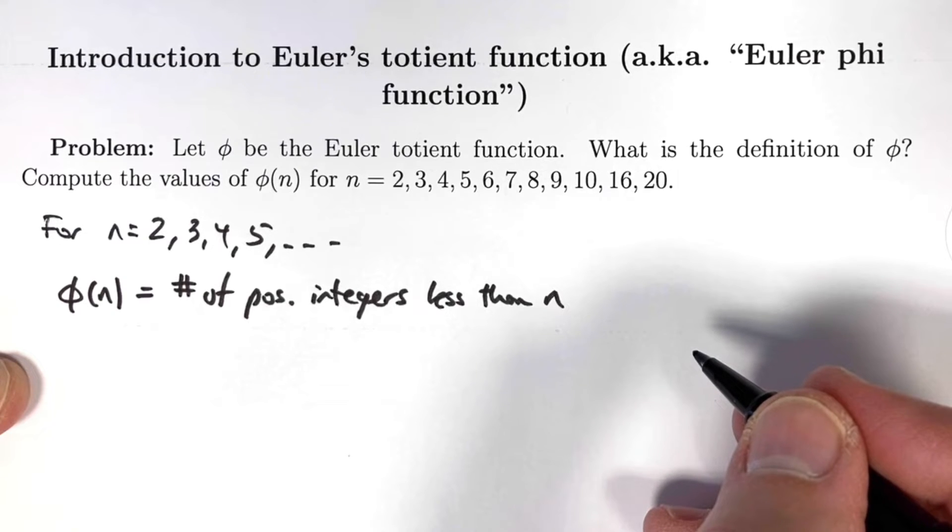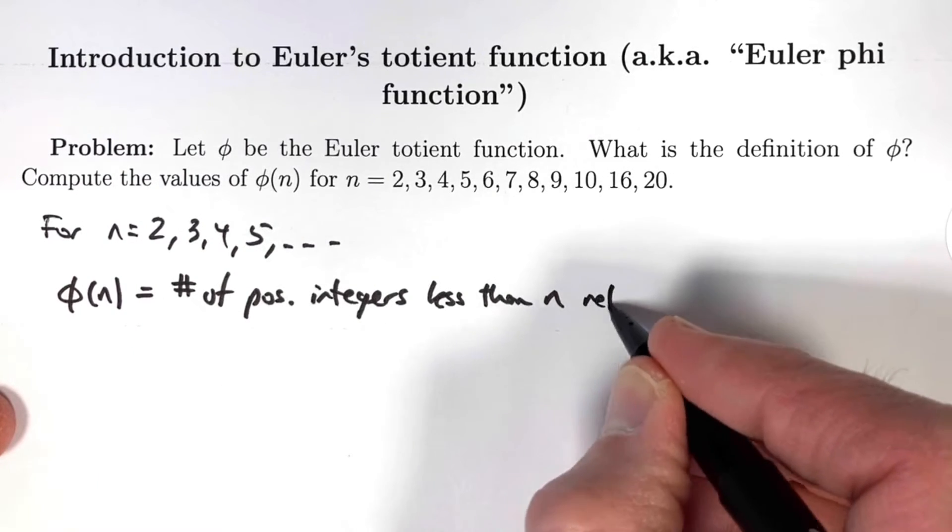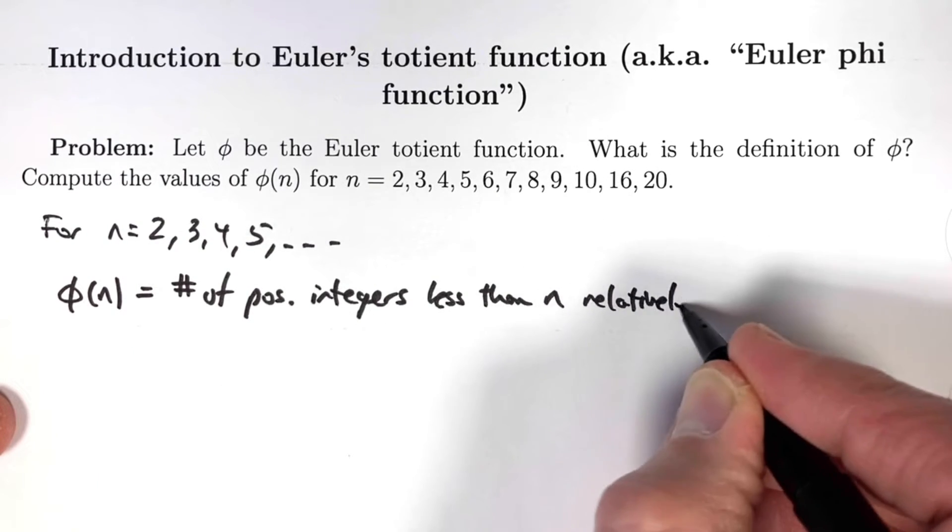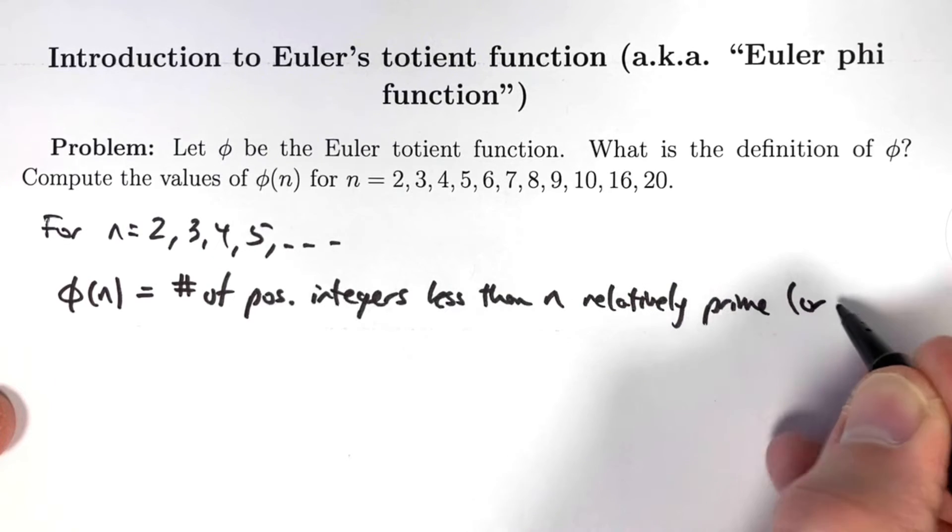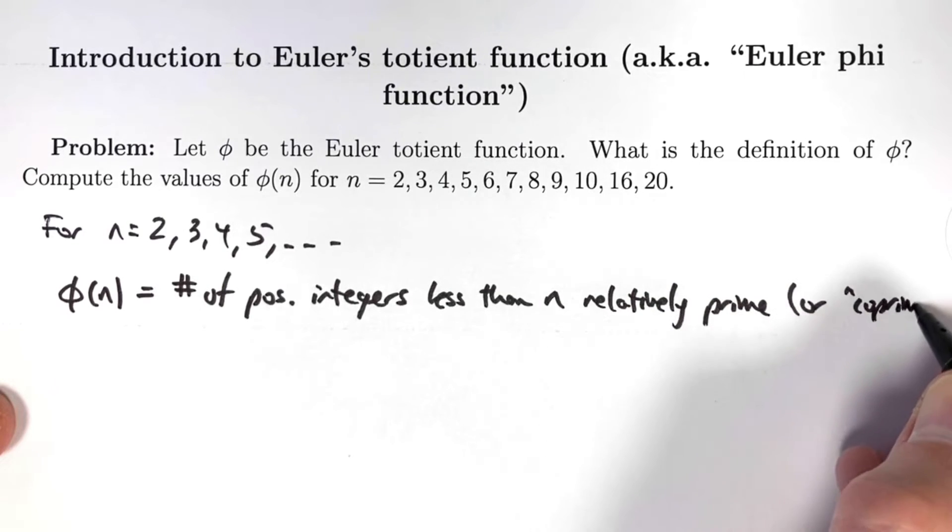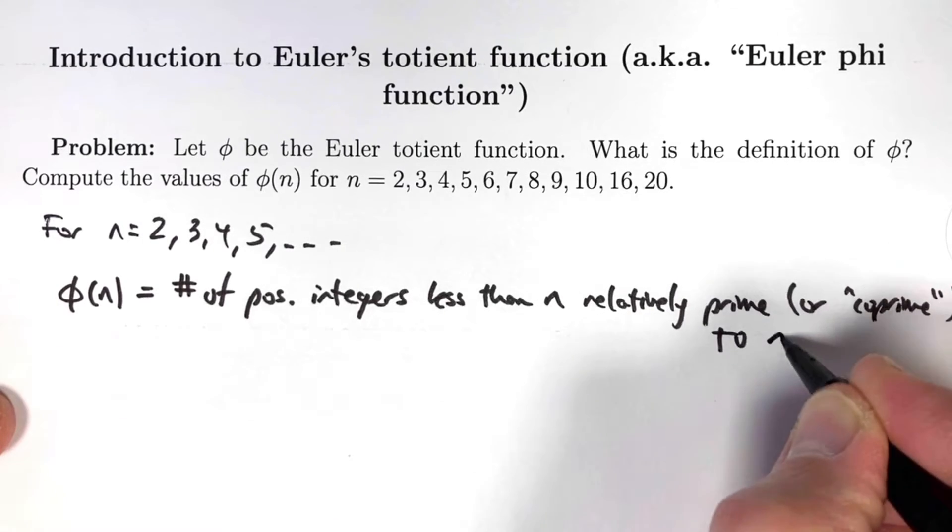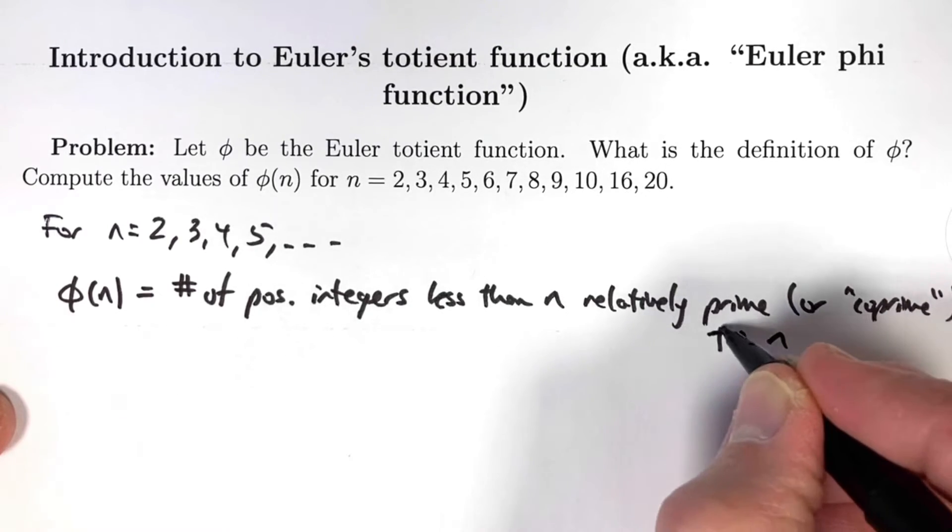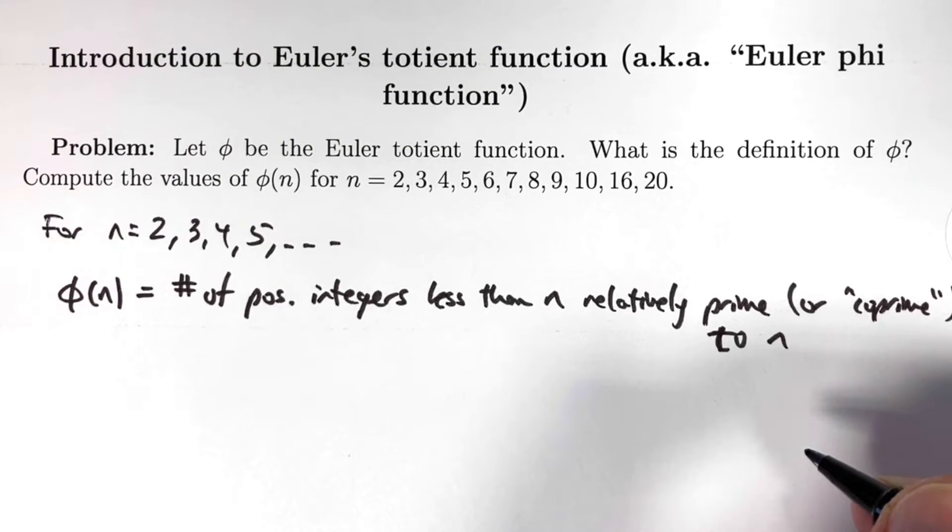What does that mean? It means they have no prime factors in common with n. Relatively prime or coprime doesn't mean they are prime numbers. For example, when n = 20, which has prime factors 2 and 5, an example of a number that's relatively prime to n but not prime is 9. 9 has prime factorization 3². 9 and 20 have no prime factors in common, so they are relatively prime or coprime.